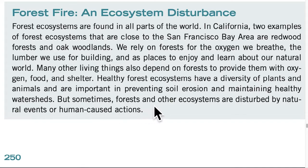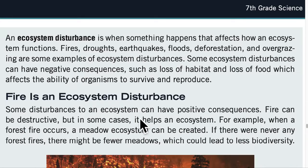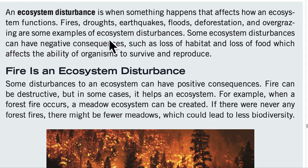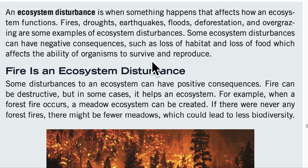But sometimes forests and other ecosystems are disturbed by natural events or human-caused actions. An ecosystem disturbance is when something happens that affects how an ecosystem functions. Fires, droughts, earthquakes, floods, deforestation, and overgrazing are some examples of ecosystem disturbances. Some ecosystem disturbances can have negative consequences, such as loss of habitat and loss of food, which affects the ability of organisms to survive and reproduce.